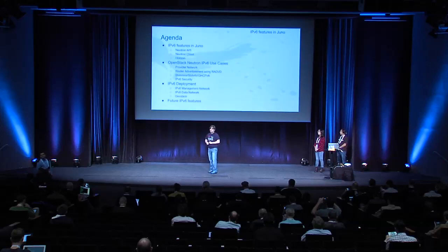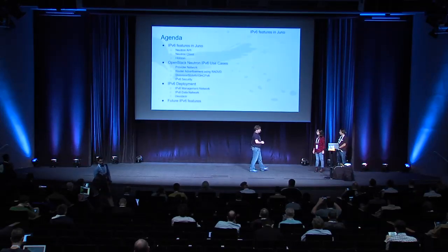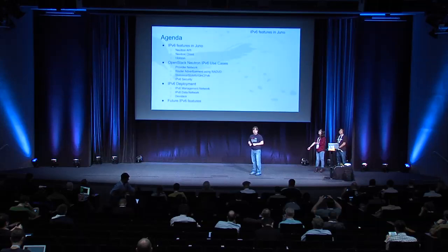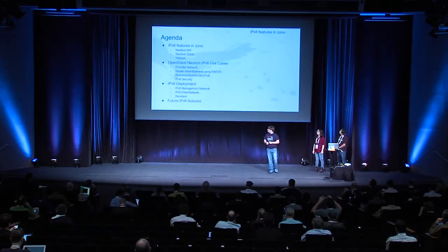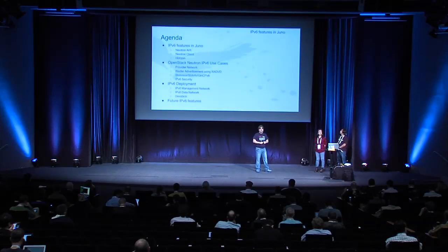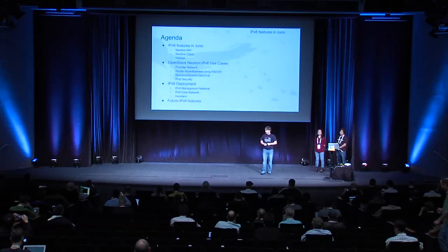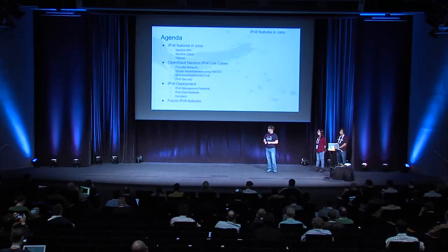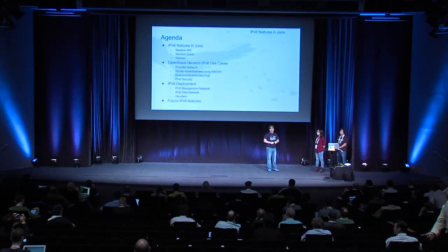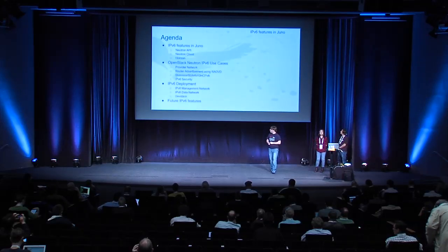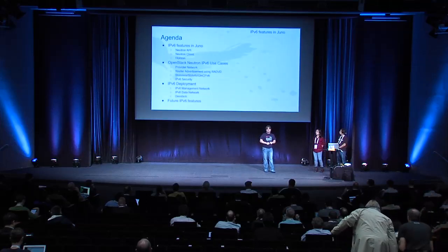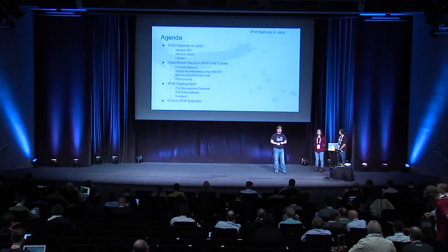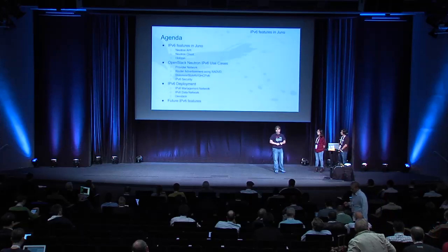The earliest use case that we had for IPv6, and what necessitated some of the changes that were made, includes provider networking, where you already have a configured router that is advertising IPv6 routes and a prefix. We have support for router advertisements through RADVD, and also support for using DHCPv6 for stateful and stateless configuration. We'll also introduce the changes made into Neutron on the security side, go through deployment options, and discuss features we hope to get into the Kilo release.